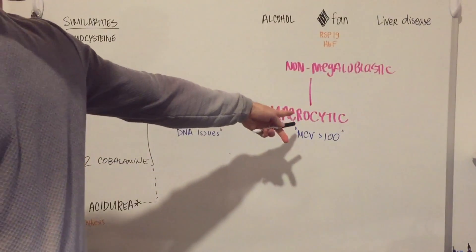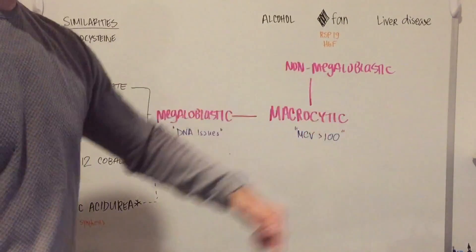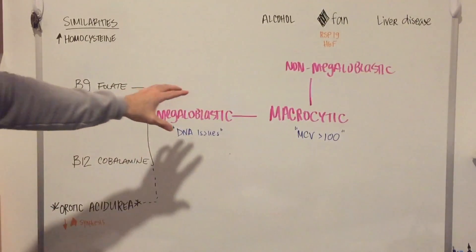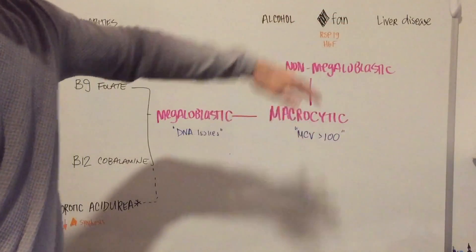So macrocytics are broken up into two categories, megaloblastic and non-megaloblastic. If there are issues with DNA synthesis, then it's going to be a megaloblastic condition. And if not, then it's going to be a non-megaloblastic.